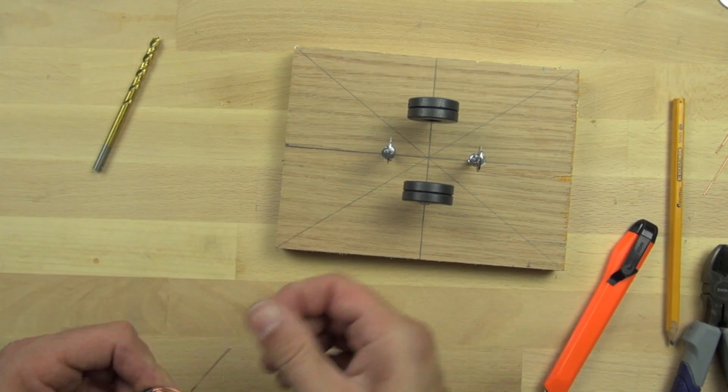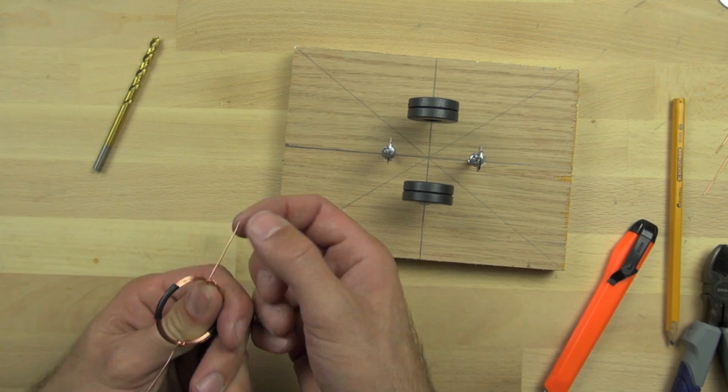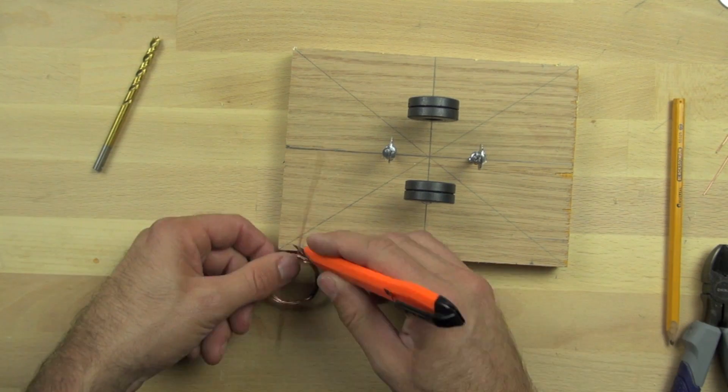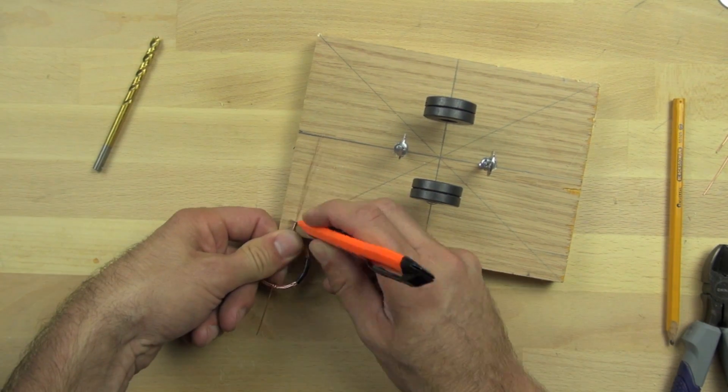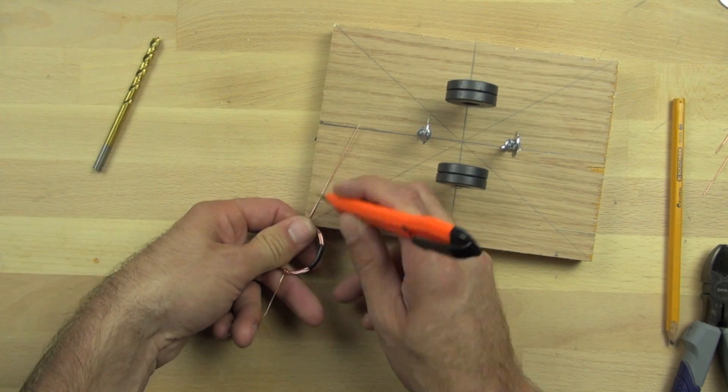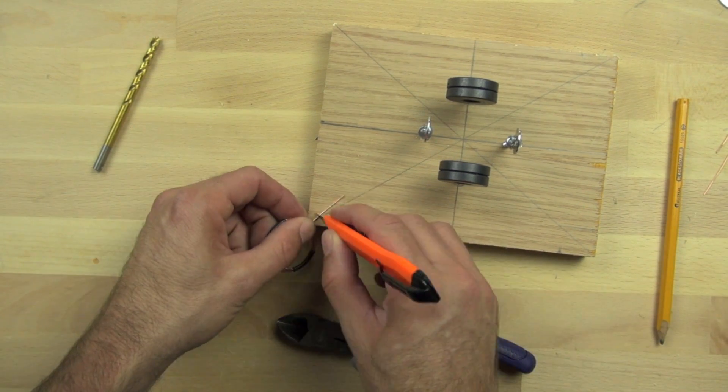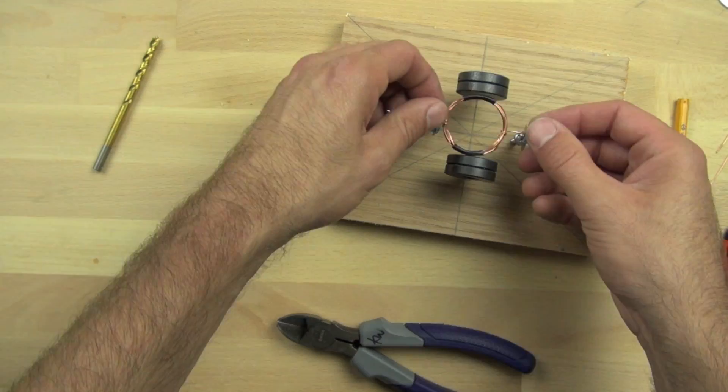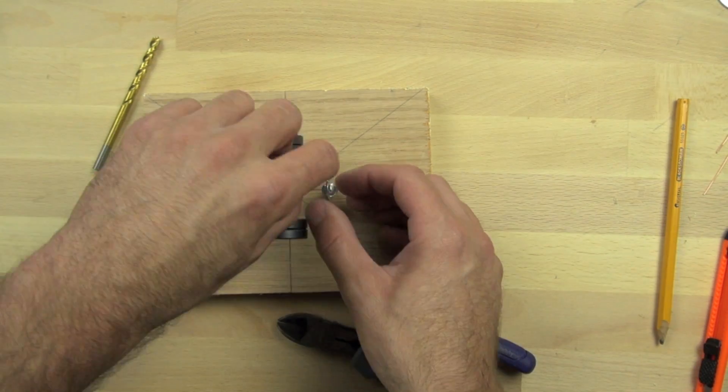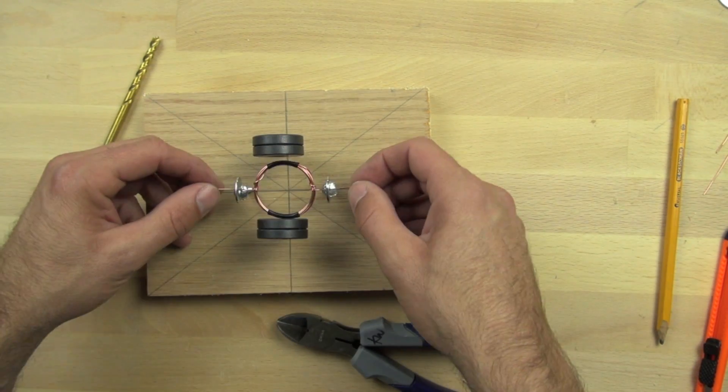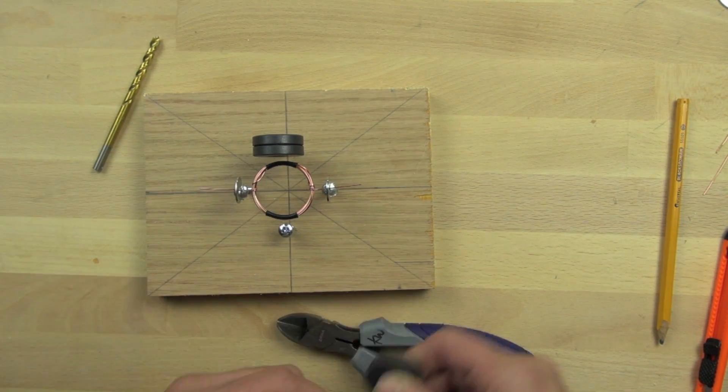And notice how I'm rotating the coil. That's important. If you just have a thin strip scraped off, it may not be enough. So you really want to make sure the entire backside of the wire is completely scraped clean of the insulation. And you can feel the difference once the insulation is completely gone. It's a little rougher than when it's still there.